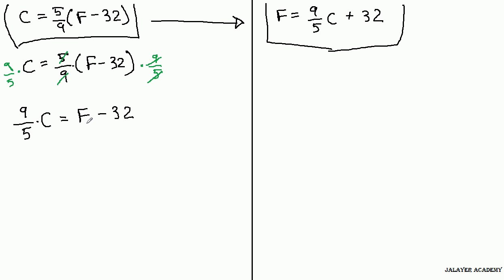And we're almost there. F just has one more thing with it that we need to get rid of. We need to take this 32 to the other side. And the way you do that, you take the additive inverse, so plus 32 on this side, plus 32 on this side, and what's left is nine-fifths times C plus 32 equals F.